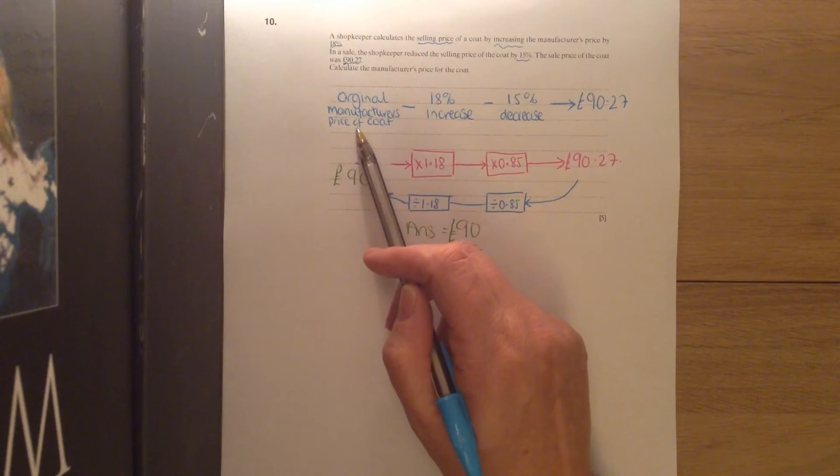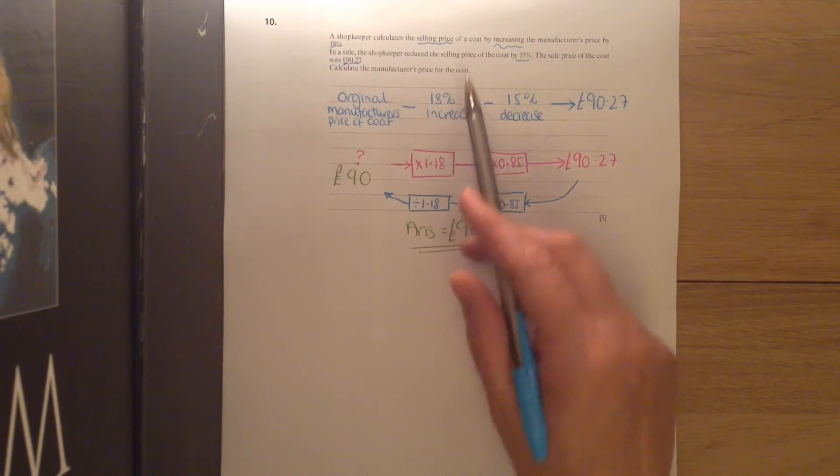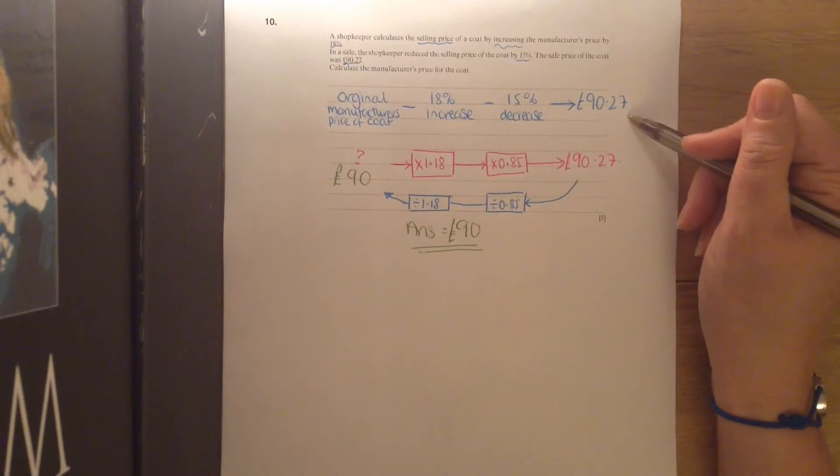So we had the manufacturer's original price, it was increased by 18%, and then during the sale it was reduced by 15%, and that gave us the answer £90.27.